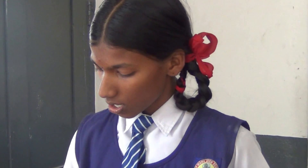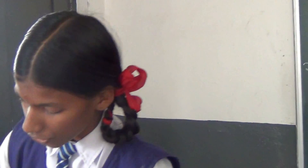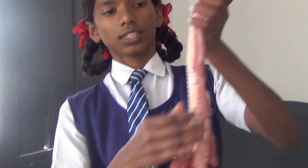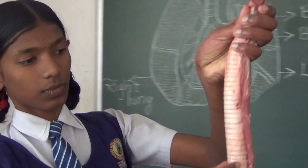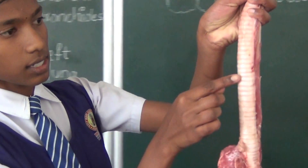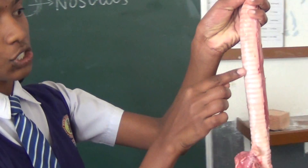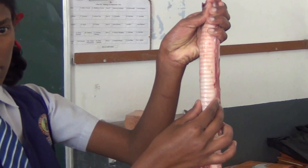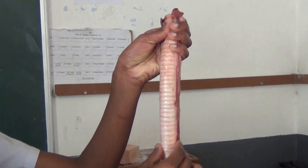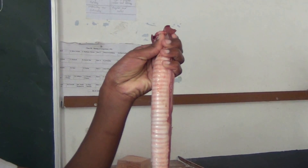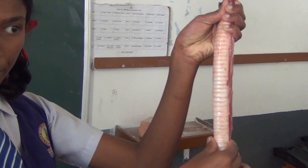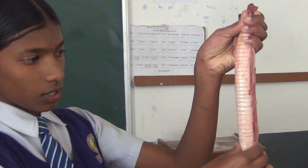Now we'll see the trachea. This is the trachea. You can see the C-shaped cartilaginous bones. What is the function of them? To prevent the trachea from collapsing.